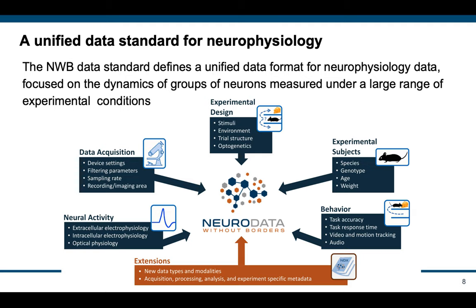NWB supports behavioral data, as well as the metadata about data acquisition, such as devices, experimental designs including stimuli and trial structures, and experimental subjects. NWB also supports formal extension of the data standard to support addition of new data types and modalities, as well as metadata that is specific to labs, acquisition, processing, analysis, and experiments.